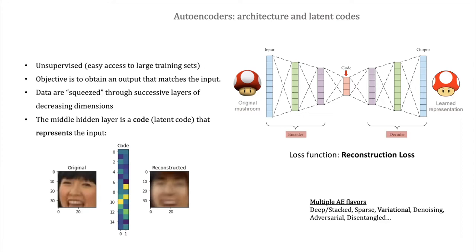There are multiple flavors of autoencoders — deep stacked autoencoders, sparse, variational autoencoders that we'll talk about in more detail later, denoising autoencoders, adversarial, disentangled, and so on. But these are small variations of the main theme that I just talked about.